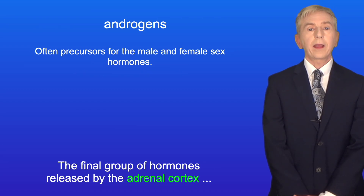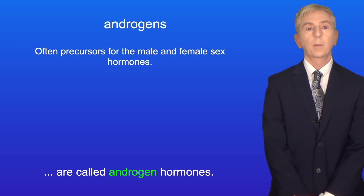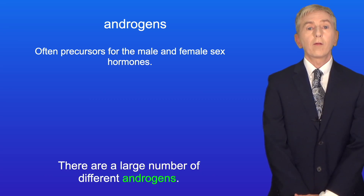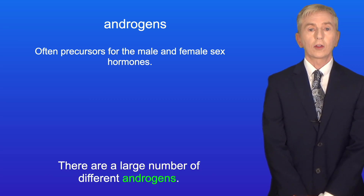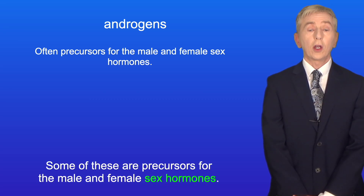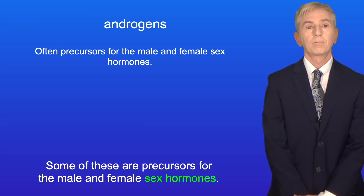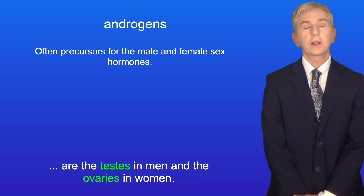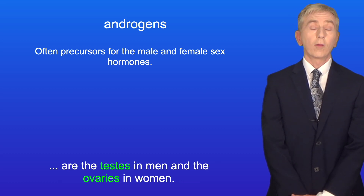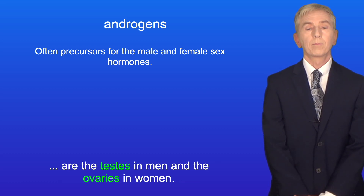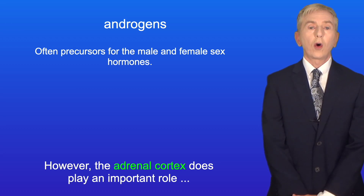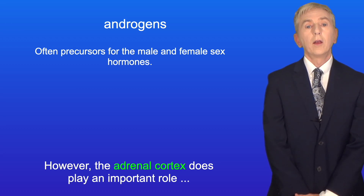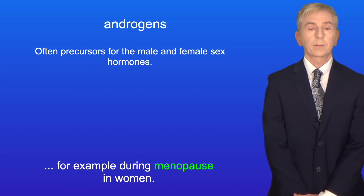The final group of hormones released by the adrenal cortex are called androgen hormones. There are a large number of different androgens, and some of these are precursors for the male and female sex hormones. The main sources of sex hormones are the testes in men and the ovaries in women. However, the adrenal cortex does play an important role, for example during menopause in women.